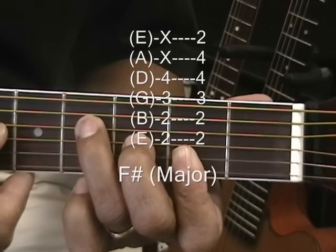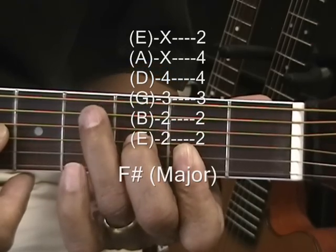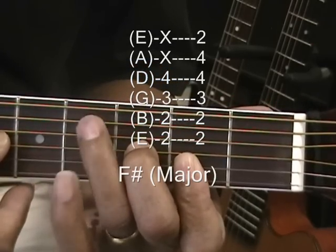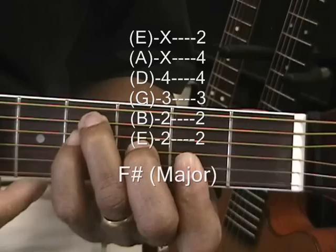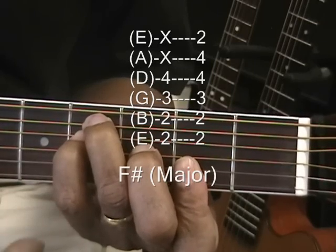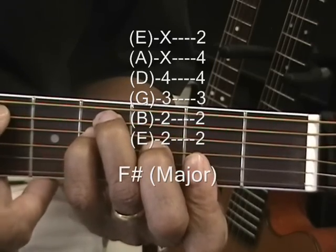Now if we want to change that a little bit, we can bring the ring finger up to the A string and bring in the pinky under it. And then we've got more notes to work with there.